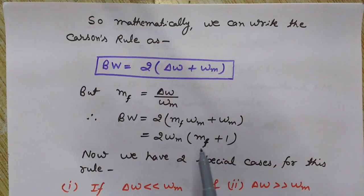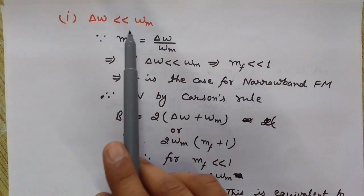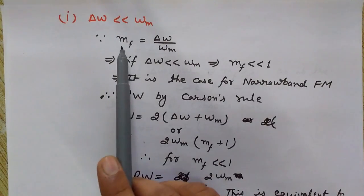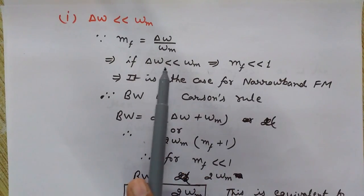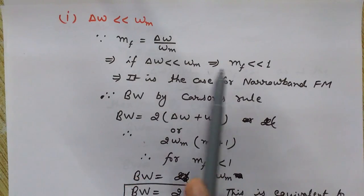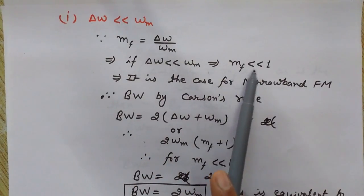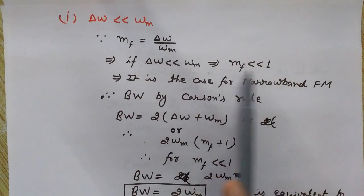Taking ΩM as common, we get Bandwidth = 2 × ΩM × (MF + 1). Now we have two special cases. The first case is when ΔΩ is less than ΩM, and the second case is when ΔΩ is greater than ΩM. In the first case, since ΔΩ is less than ΩM, the modulation index MF = ΔΩ / ΩM is less than one. This is the case for narrowband FM.